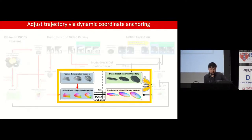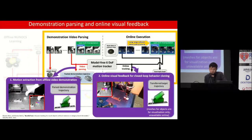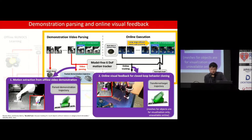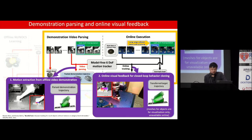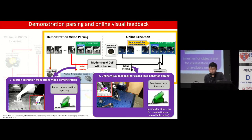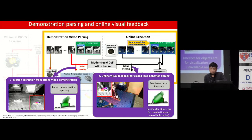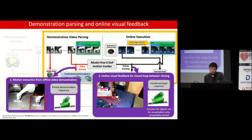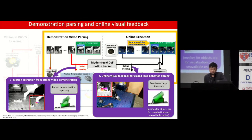Now let's look at the tracker. Because we want to apply the tracker to novel unseen instances, we adopted our previous method, BonoTrack, which does not rely on instance or category-level 3D models. The tracker serves two purposes: during offline processing, we parse the video demonstration and extract the motions; and during online execution, the visual tracker provides visual feedback for closed-loop control.